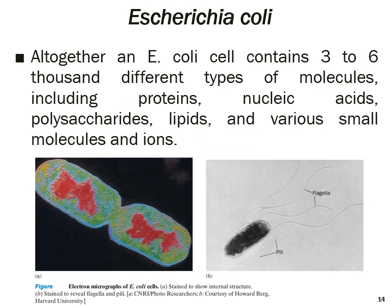E. coli contains three to six thousand different types of molecules, including proteins, nucleic acids, polysaccharides, lipids, and various small molecules and ions. This means that even this single-celled organism has great molecular diversity — cells are made by complex molecular machinery. In the diagram, figure A shows the internal structure of E. coli, and figure B shows the flagellum structure as seen under the electron microscope.